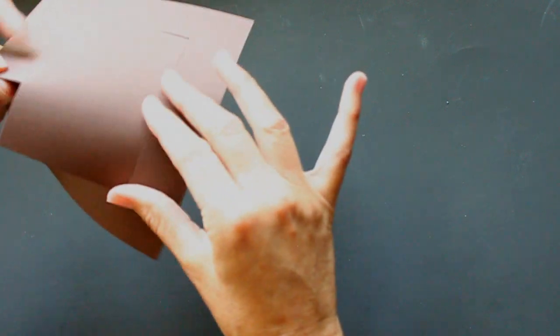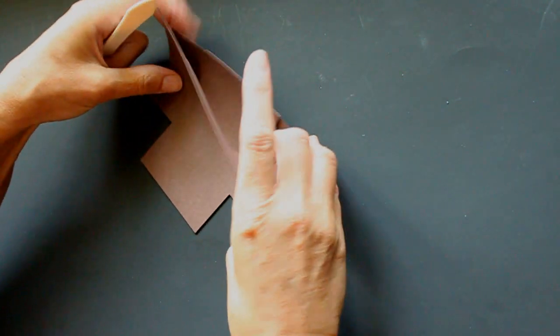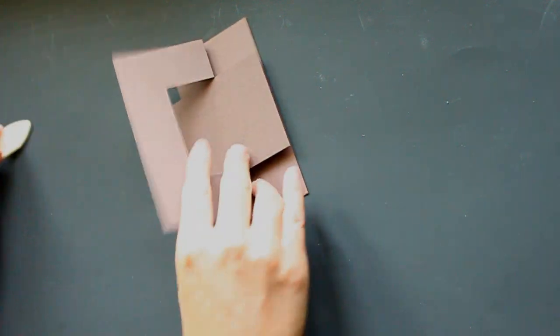You just fold your first score line down and your second score line up. It's ready to decorate.